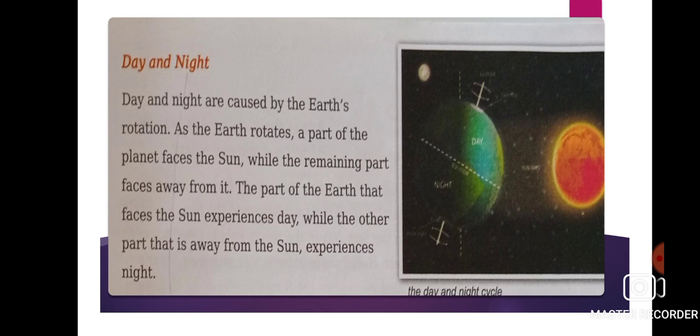Day and night are caused by the Earth's rotation. As the Earth rotates, a part of the planet faces the sun. You can see in the image: once the Earth has rotated, half of Earth is in sunlight and half of Earth is in the dark. The half part which is in sunlight experiences day, whereas the half part that is far away from the sun experiences night.